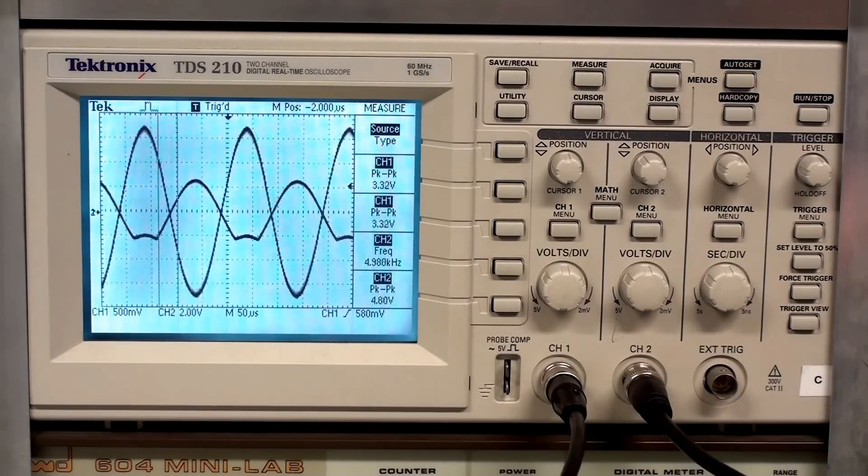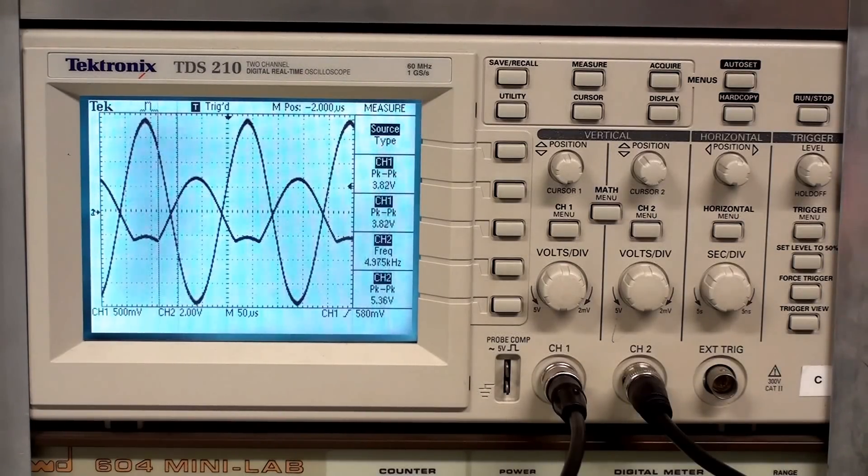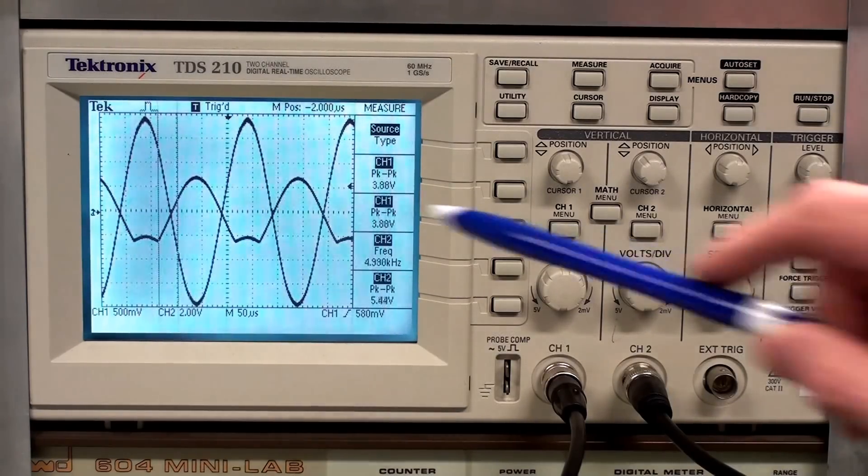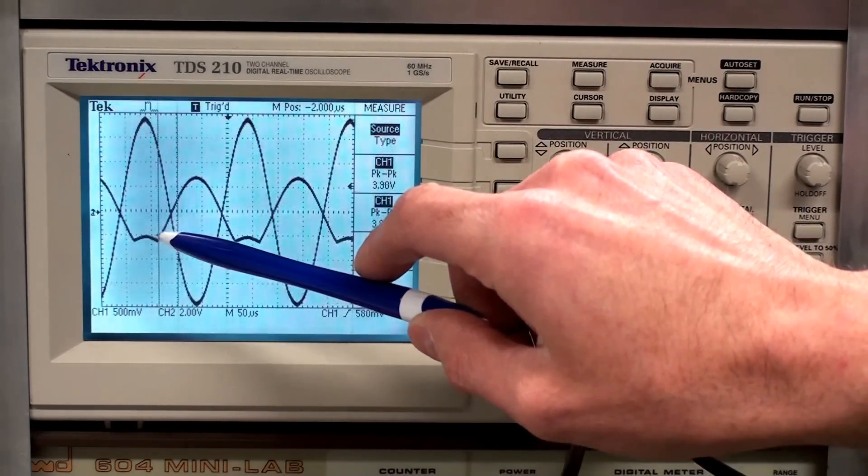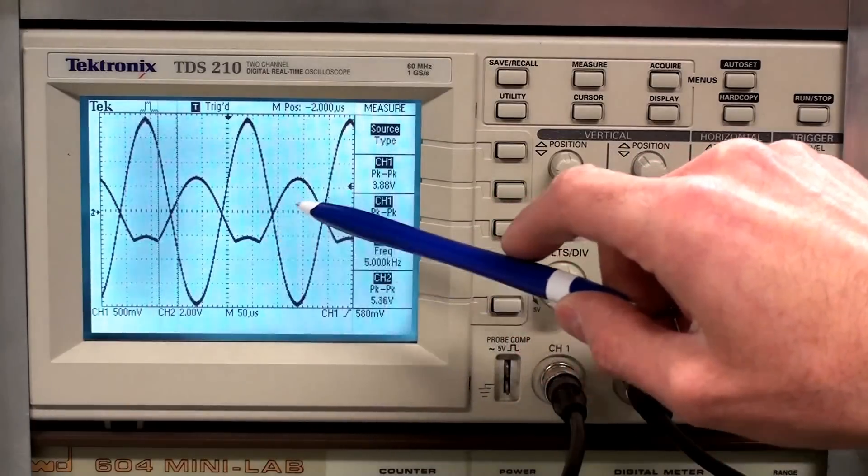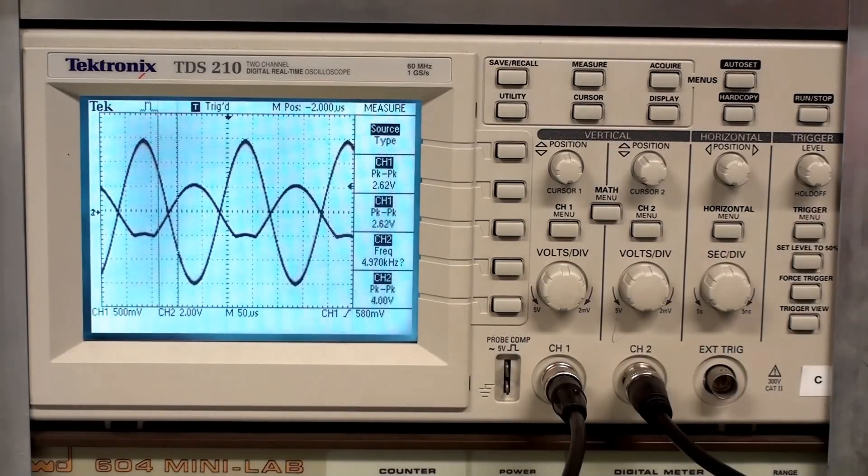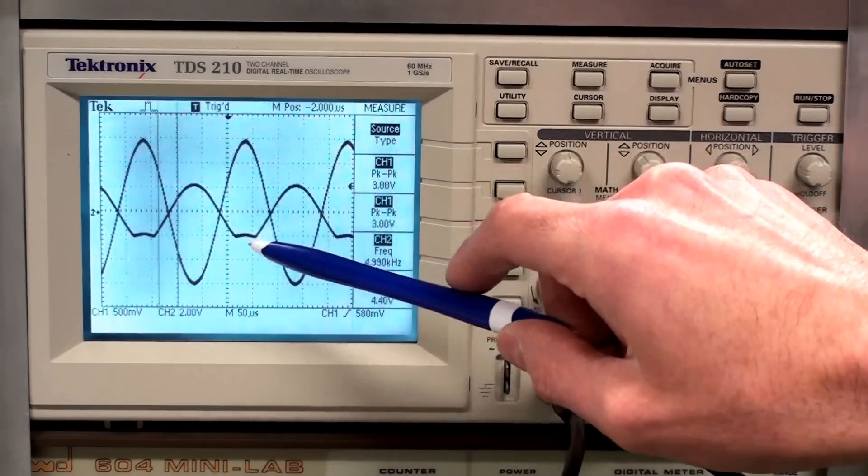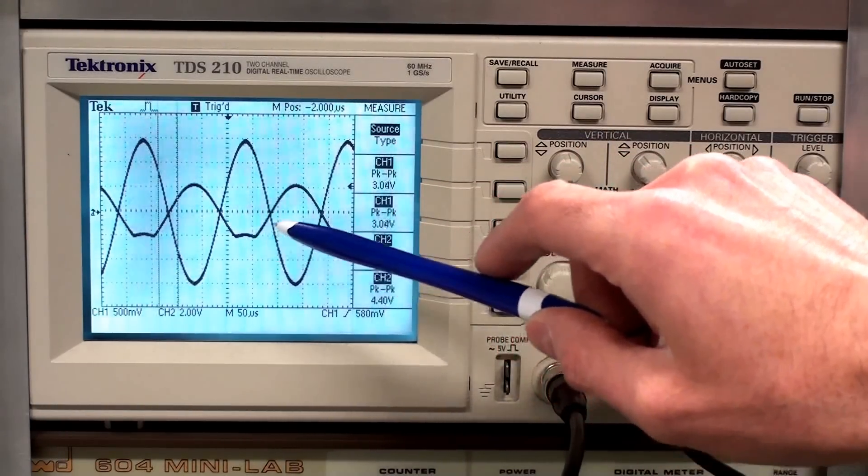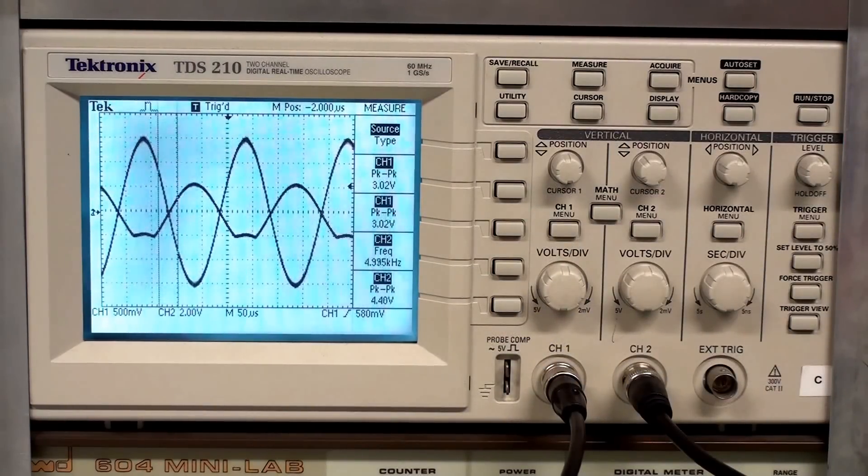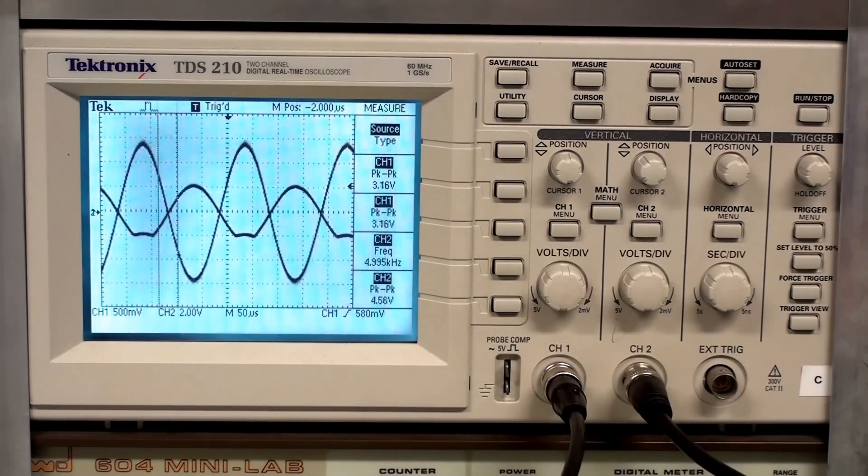You'll notice that it starts to clip on the trough of the output sine wave like that. If I increase the input further, you can see that the output gets very distorted on the trough of the sine wave. Because it's not symmetrical, because we only get clipping on the trough, it means that the Q point is not in the correct location.